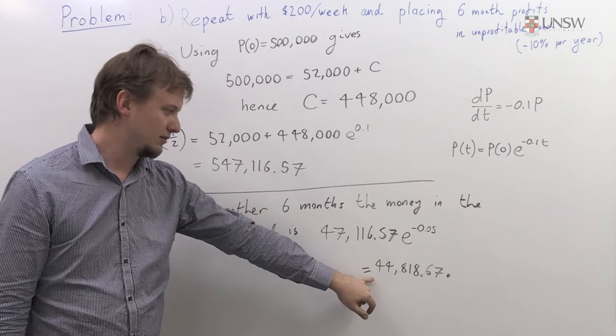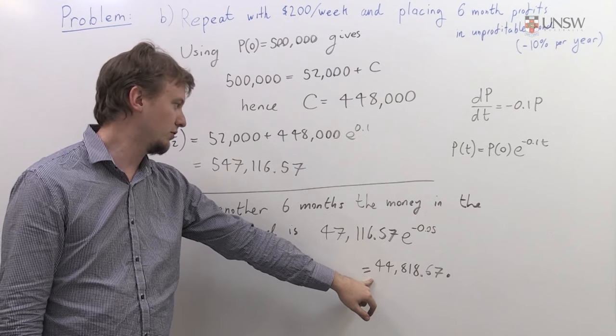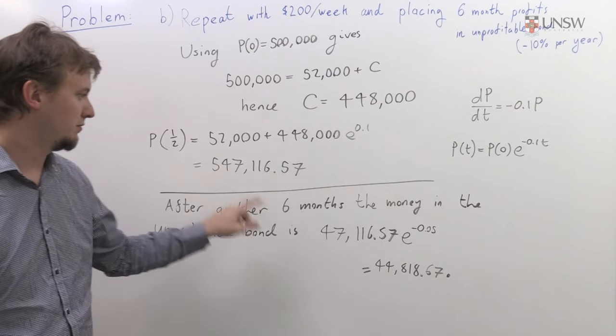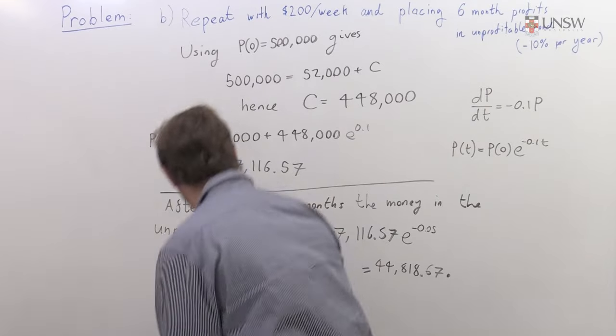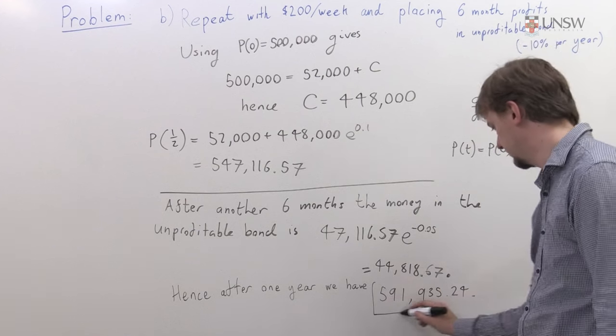We're going to add that to the money that we have in the other bond. So in total, we will just have the sum of these two numbers, and that is $591,935.24. So that's my answer for part B.